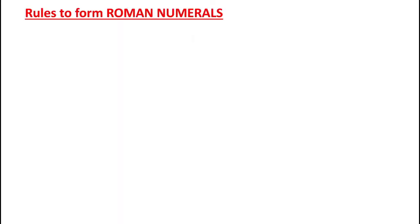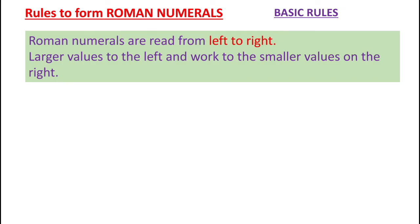The rules to form Roman numerals: the first basic rule is that Roman numerals are read from left to right — larger values to the left and smaller values on the right. Its example is CV, where C stands for 100 and V stands for 5. We can see that C is the larger value and is present towards the left, whereas V is smaller and is present towards the right side.